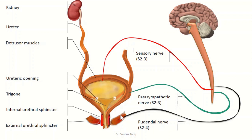The urinary bladder is supplied by both sensory and motor nerves. The sensory nerve carries impulses from the stretch receptors and enters into the S2 and S3 sacral segments of the spinal cord. The motor nerve arises from S2 and S3, travels via the parasympathetic nerves, and supplies the detrusor muscle in the wall of the bladder and the internal urethral sphincter. Both sensory and parasympathetic motor nerves are present inside the pelvic nerves.